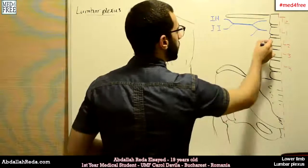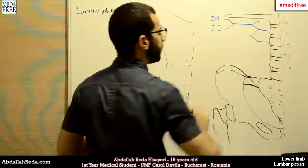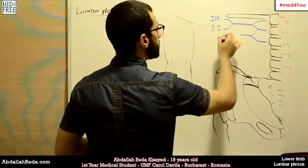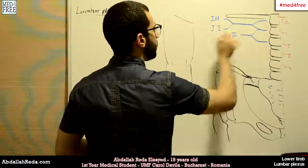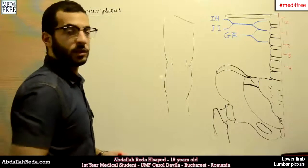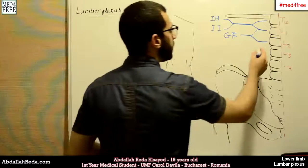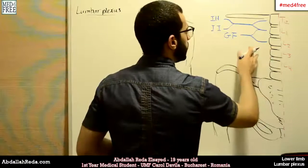Then we have the lower division of L1, which anastomoses with the upper division of L2 to give us the genitofemoral nerve.